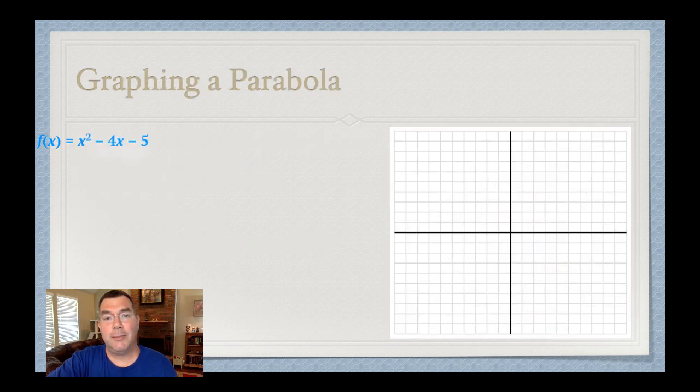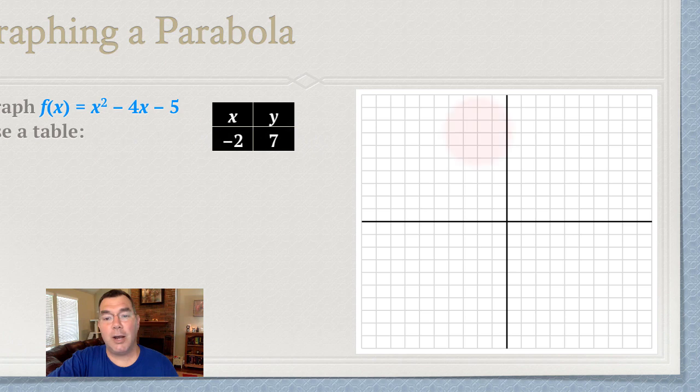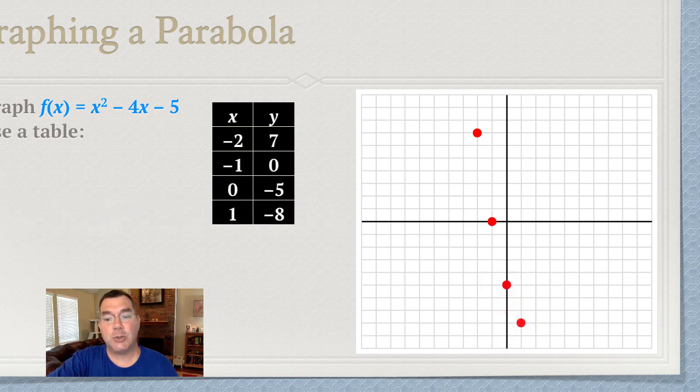All right, so when I'm graphing a parabola, let's start out with basics. Let's say I'm given that function there, f of x or y equals x squared minus 4x minus 5. So what I would do is I would start out making a table of x and y values, and I would plot those points on a graph. And I want to do quite a few because I want to get the general shape of what that graph actually looks like.